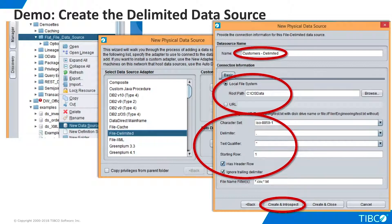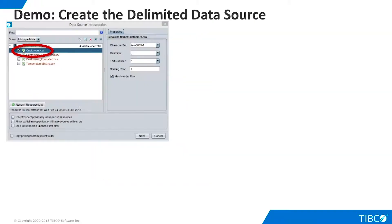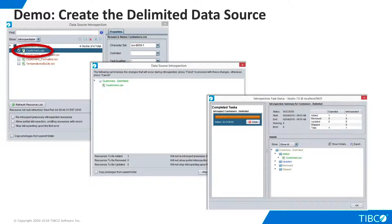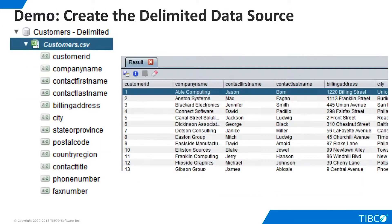Now we're ready to create and introspect. We select the delimited file we want from the directory and click Next. We click Finish and then OK. Our delimited file now appears as a table in the TDV namespace. We can open it and view the data.